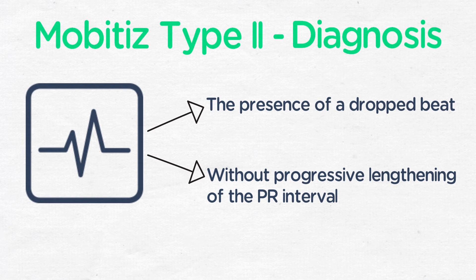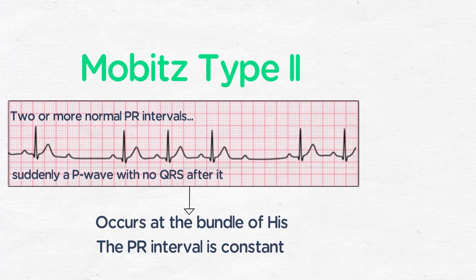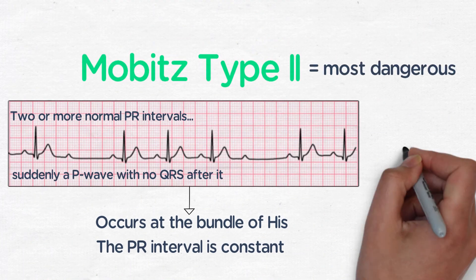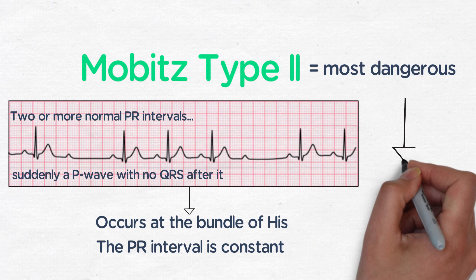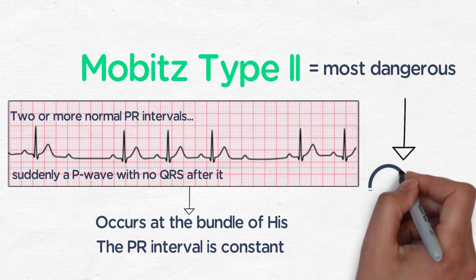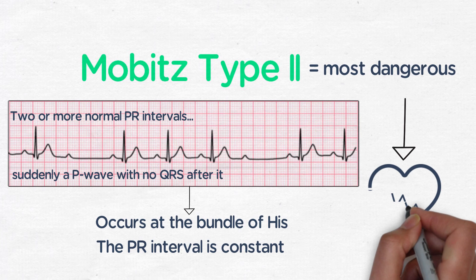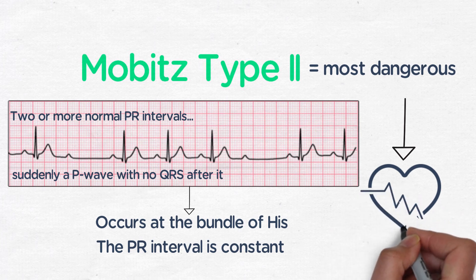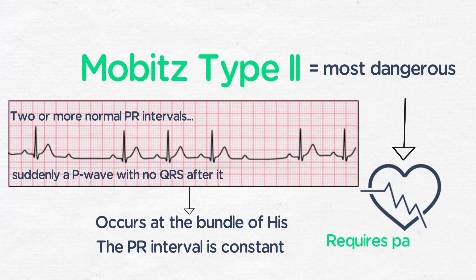Mobitz type 2, while not as strange looking on EKG as type 1, is actually much more serious and dangerous. Because it signifies conduction problems through the bundle of His, it is prone to suddenly progressing to third-degree complete heart block. Second-degree blocks typically require placement of a pacemaker, because they are inherently unstable.